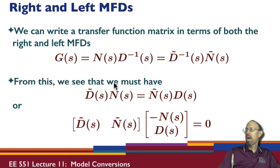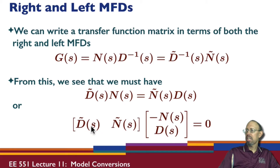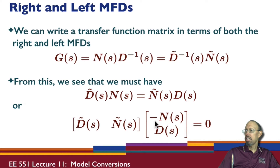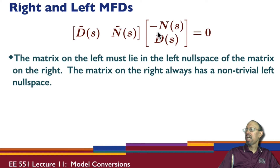This tells us how right and left factors must satisfy this relationship. Given N and D, the tilde quantities must satisfy this equation, which means when we multiply on the left by that quantity we get zero — so the matrix on the left must lie in the left null space of the matrix on the right. That matrix always has a non-trivial left null space, so we can always find Ñ and D̃.